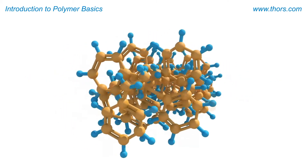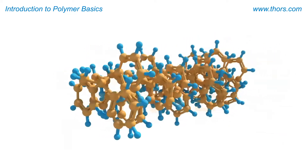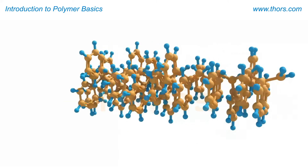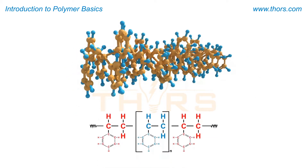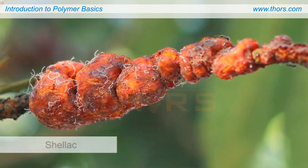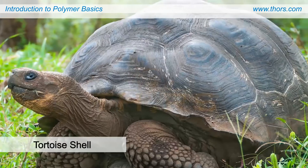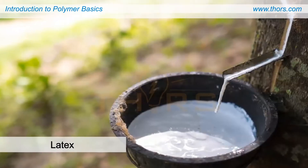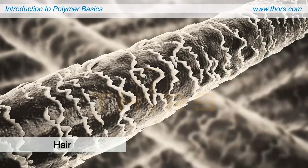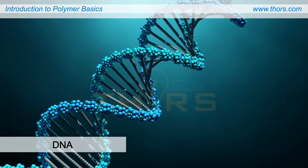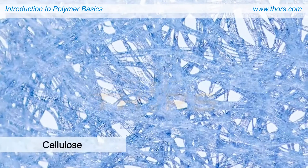Polymers are a group of high molecular weight compounds made of monomers, which are smaller repeating units. The monomers are linked by covalent bonds to form polymers. The common polymers occurring in nature are shellac, tortoise shell, latex, amber, hair, DNA, proteins, and cellulose.